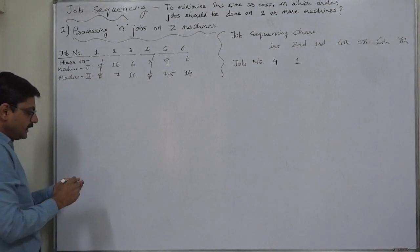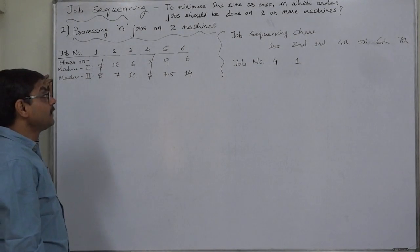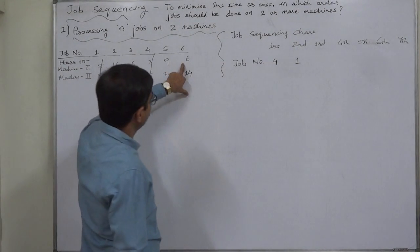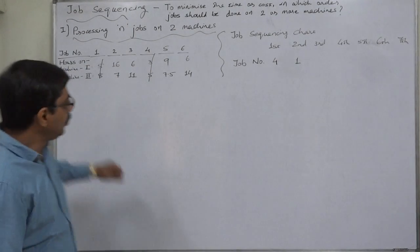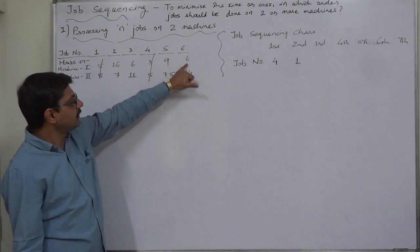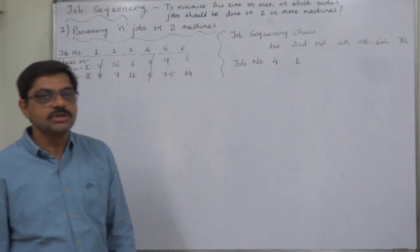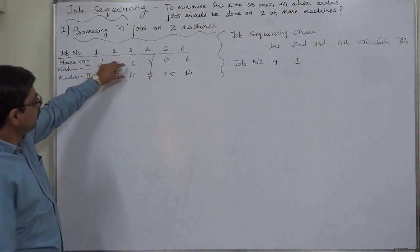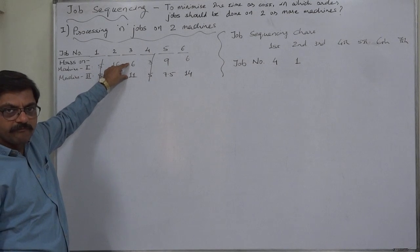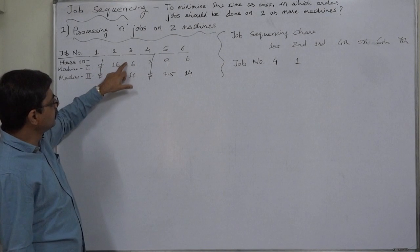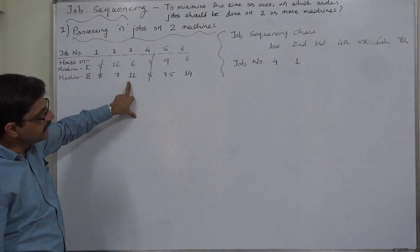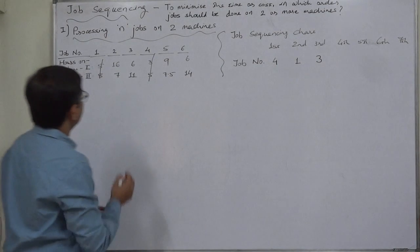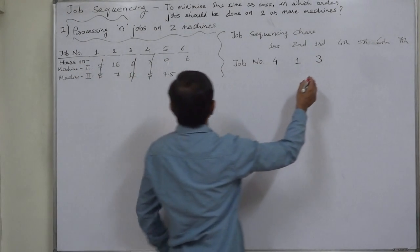Now for the remaining four jobs: job number two, three, and six. What is the minimum time? The minimum time is six — that is on machine one for job three and on machine one for job six. So there is a tie in lowest time on machine one. If the tie is on machine one, find out the total time and place the job with the lowest total time on the left hand side. So job three will be our first choice, followed by job six.